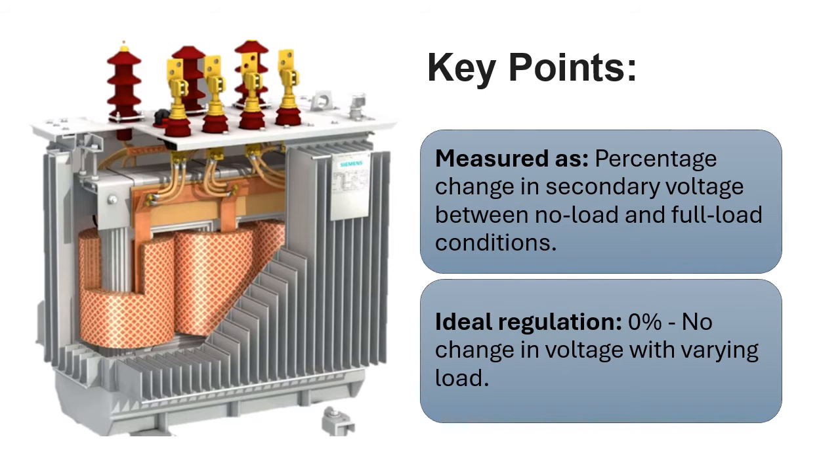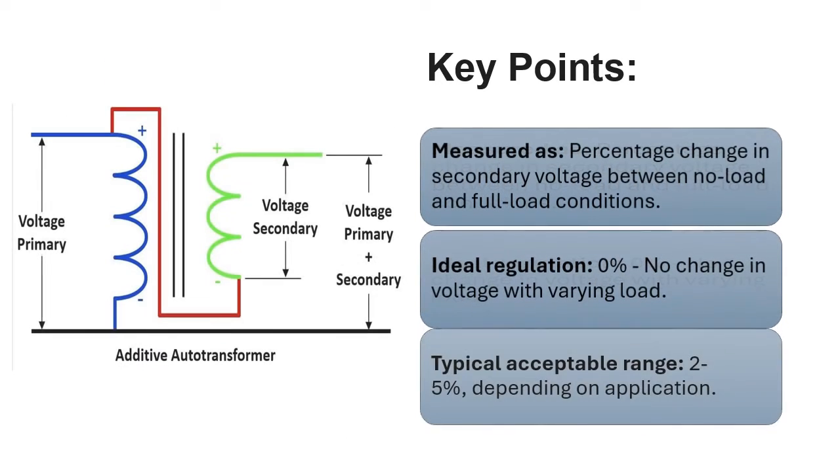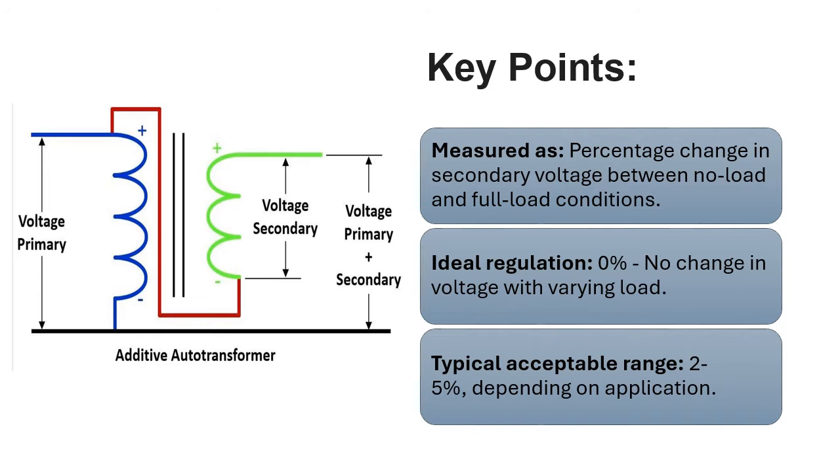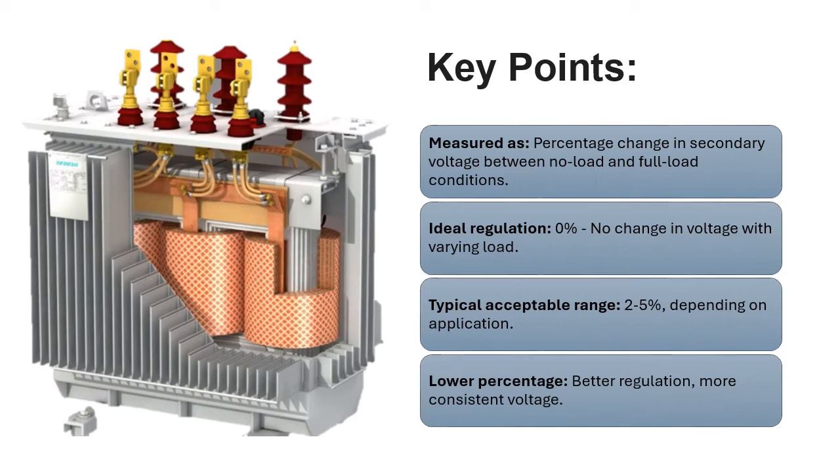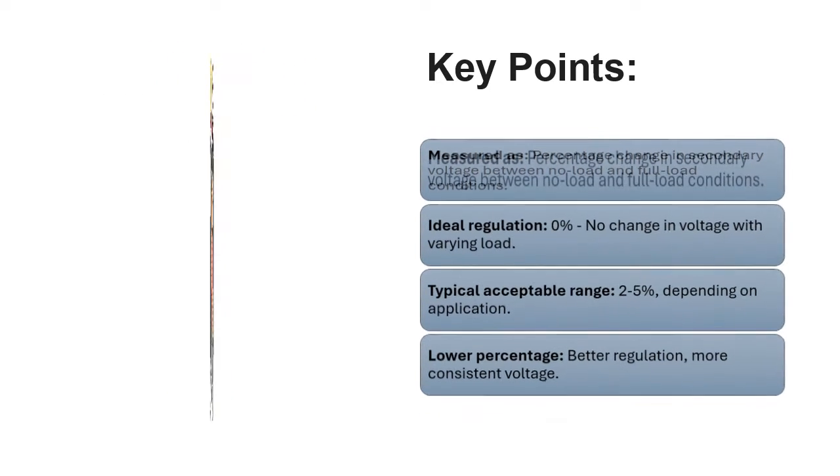Typical acceptable range is 2-5% depending on application. Lower percentage means better regulation and more consistent voltage. Factors affecting regulation include leakage reactance, copper losses, core losses, and load power factor.